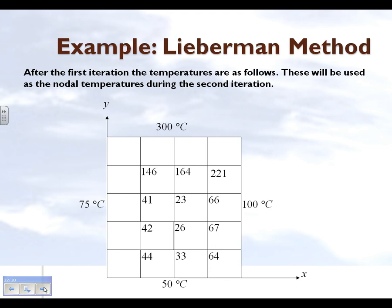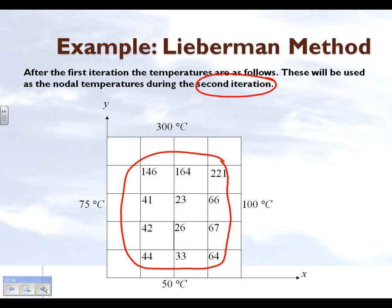We then continued the same process for all the remaining ten nodes. At the end of the first iteration, we have temperatures at all twelve internal nodes. We will use these values in the second iteration to find better steady-state temperature estimates.